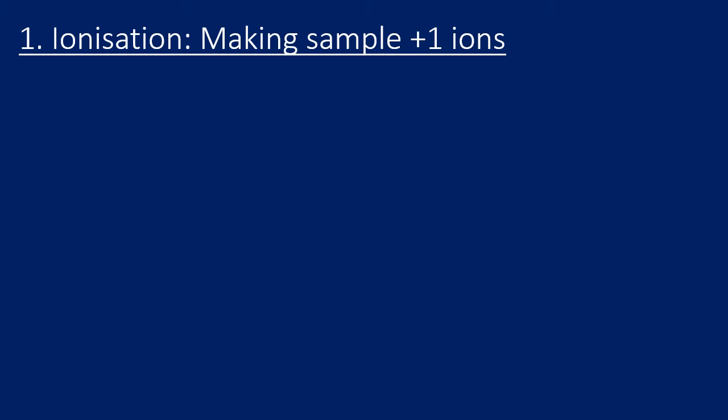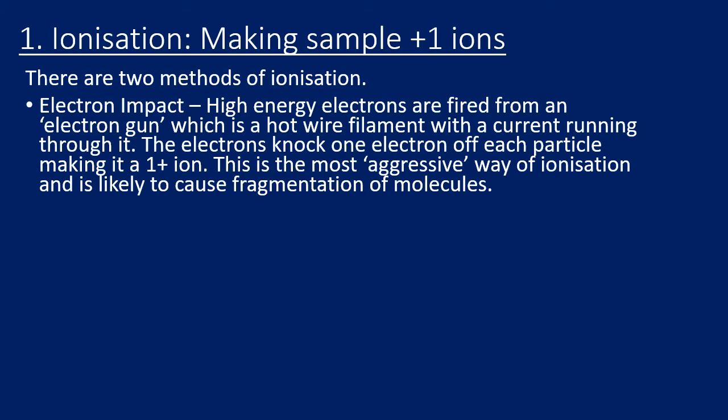The first stage is ionization — making positively charged ions from the sample. There are two ways to do that. The first is to knock an electron off, which is called electron impact. This is where high energy electrons are fired from an electron gun, and the electron gun is a hot wire filament with a current passing through it — you need to know that detail for AQA.